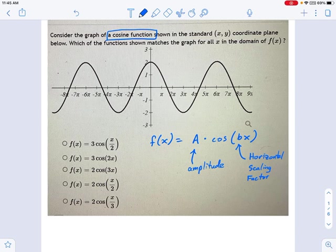And A, the amplitude, determines how high up and down this graph goes. It's in that direction. Whereas the horizontal scaling factor, as its name implies, is talking about how the graph stretches and shrinks left and right, how it gets squished like a spring or stretched out wide.